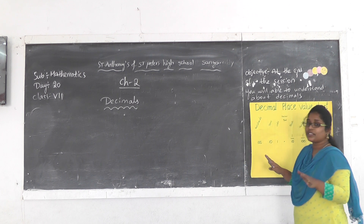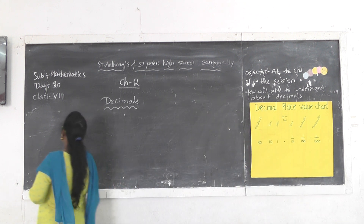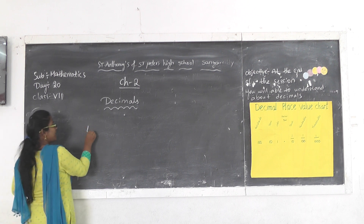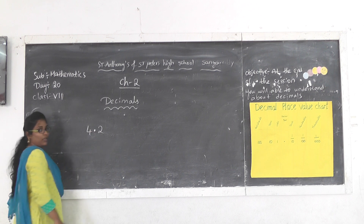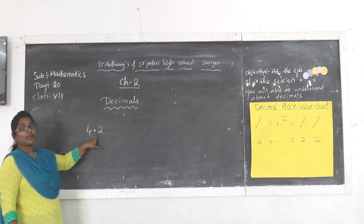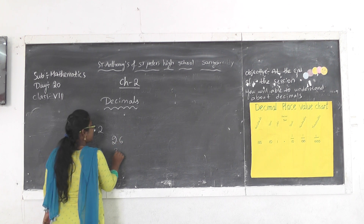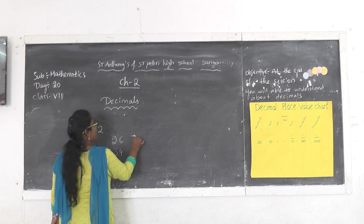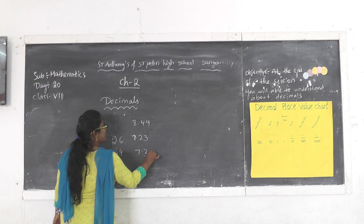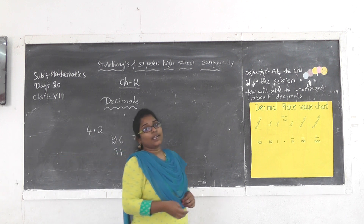By the end of this session you are able to understand what is meant by decimal numbers. Now, what is meant by a decimal number? Which numbers do we call decimal numbers? The numbers which have a decimal point are called decimal numbers. For example: 2.6, 3.4, 7.23, 8.49, 7.391, 6.240 — these all come under decimal numbers.